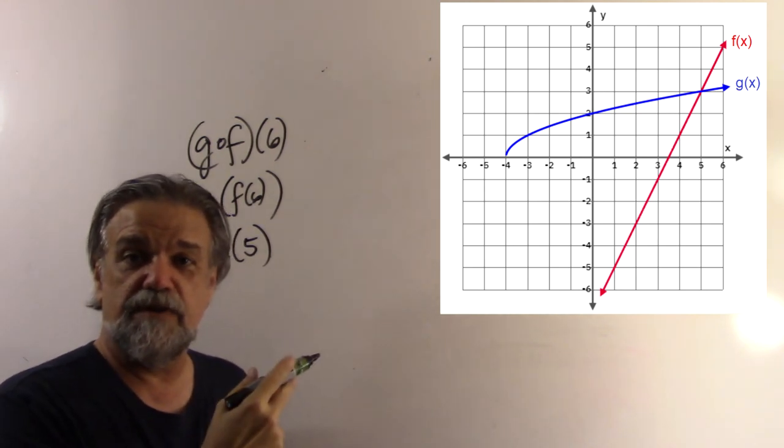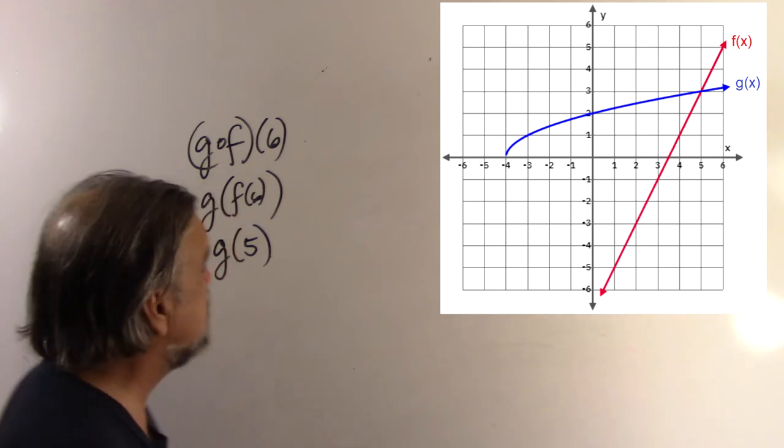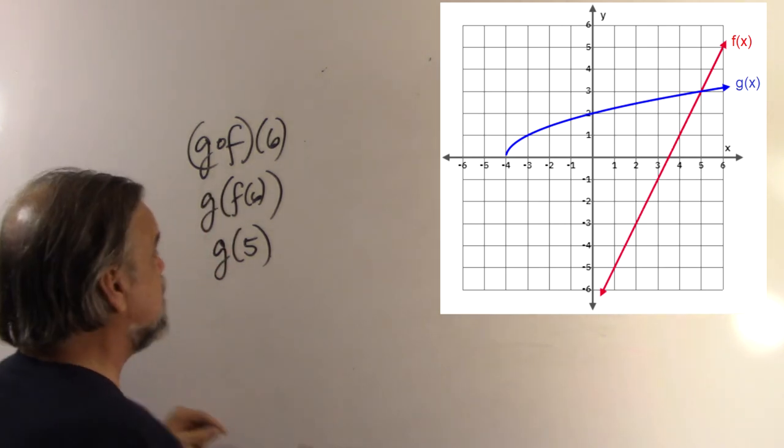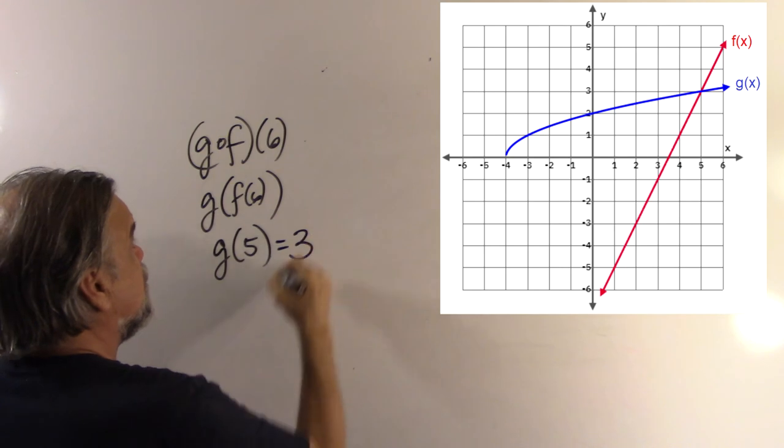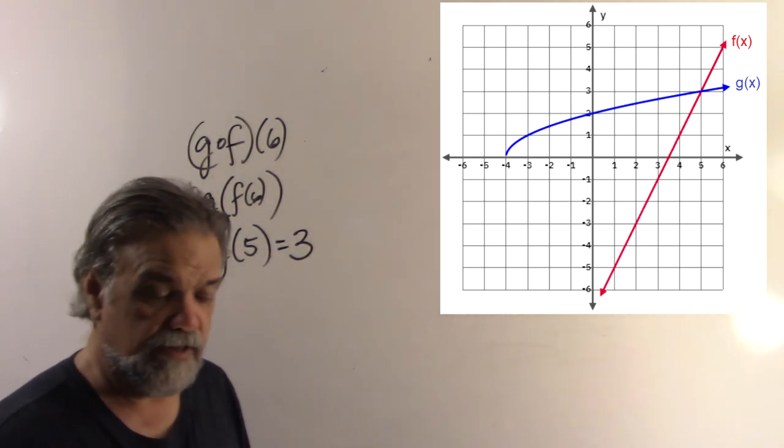And now it's time to look at the blue function and see, well, what's y when x is 5? And what I see is it passes through the point (5, 3). So, this is going to be 3. So, g(f(6)) gets me 3. Let's look at another one.